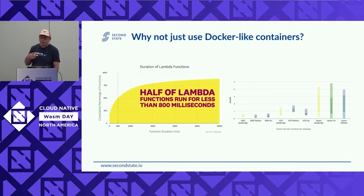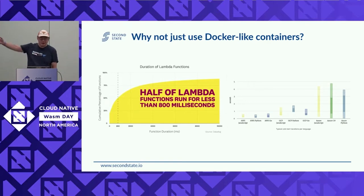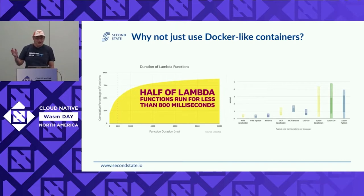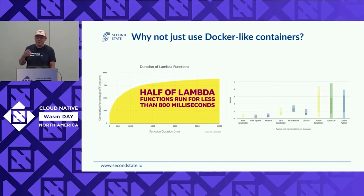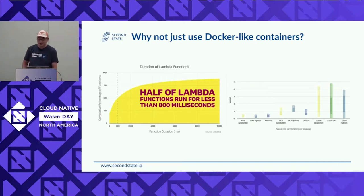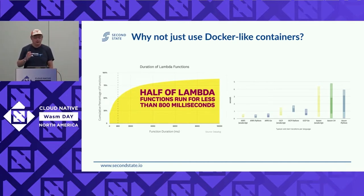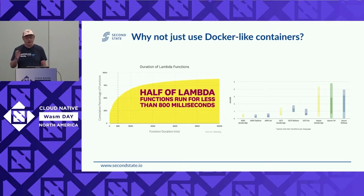That's not a very effective way of using system resources. Here are two graphs — when Datadog presented this graph saying half of Lambda functions finish in less than 800 milliseconds, my reaction was: really, half of them took more than 800 milliseconds? That seems very long. If you're into the Jamstack application paradigm, each web page might have 10 or 20 different microservices on the back end, and if each one takes a second, that's a very long time.